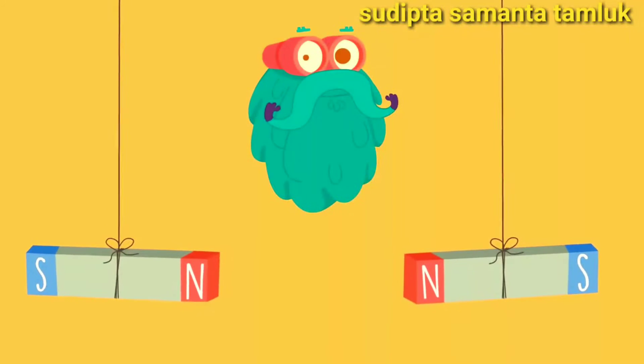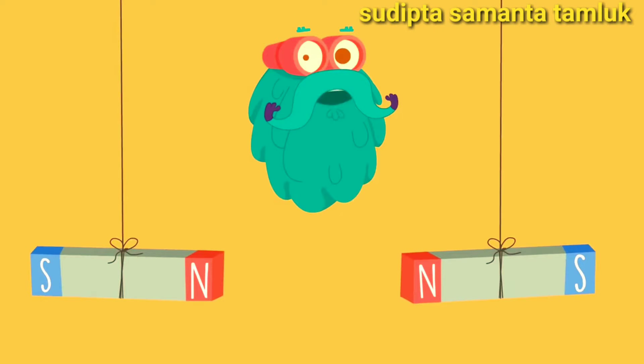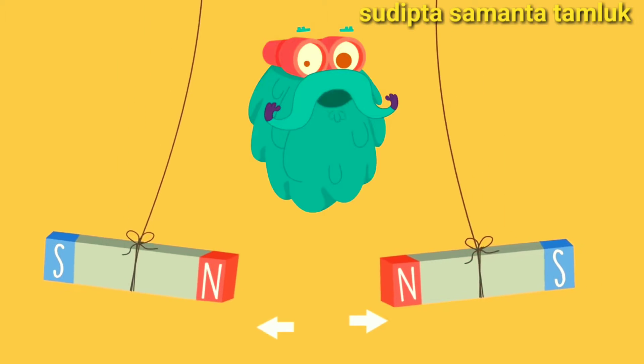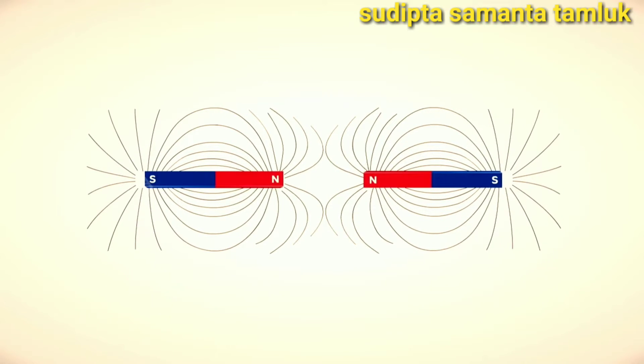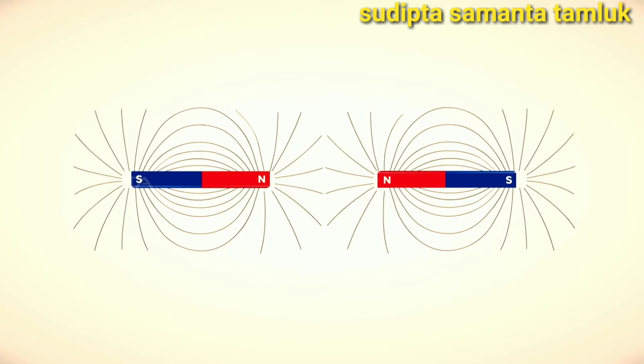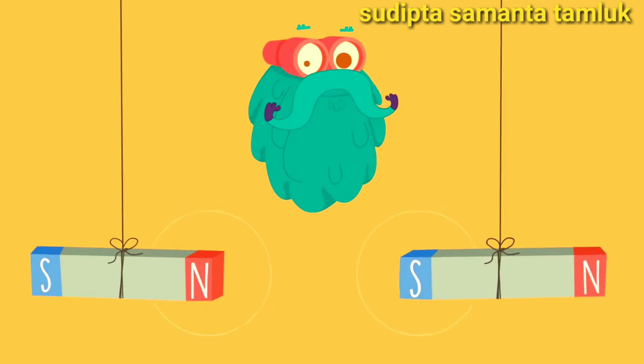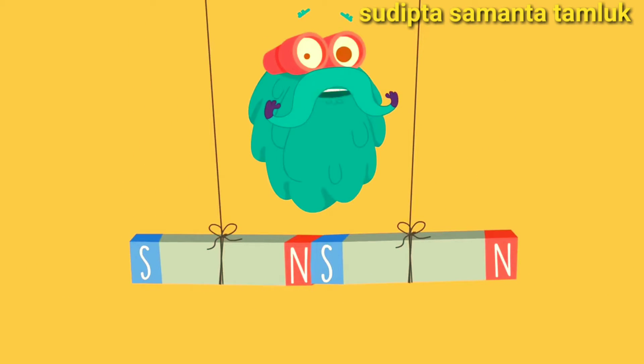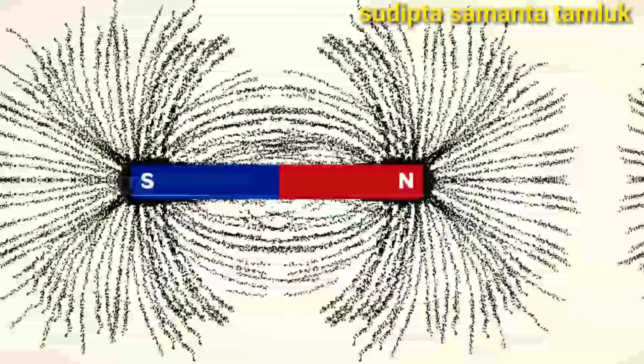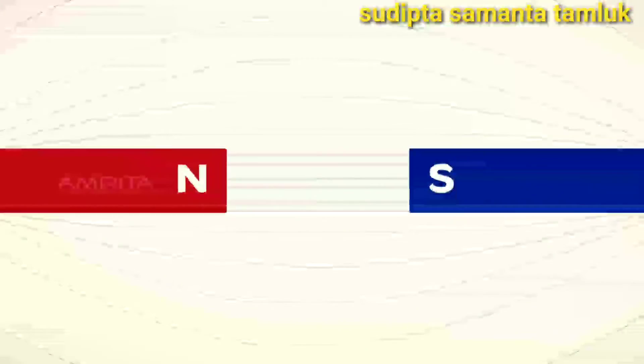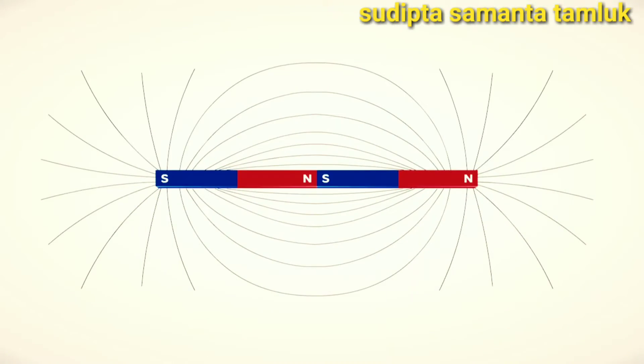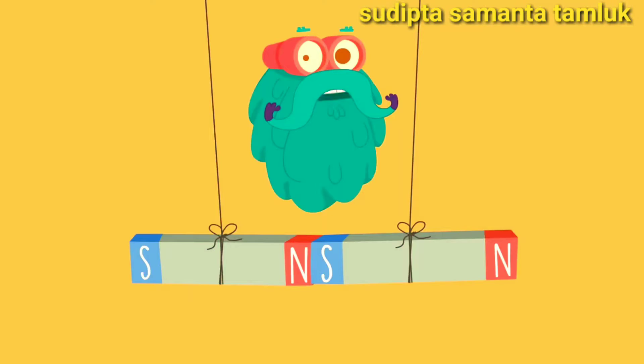Take these two magnets. The north and south pole should be marked on these magnets. Now, bring the like poles near and see what happens. The field lines of the same poles repel each other. Now, bring the unlike poles near. See, the magnets attract each other. When a pair of magnets of opposite poles is placed side by side, the field lines attract each other. This proves that unlike poles attract each other and like poles repel each other.